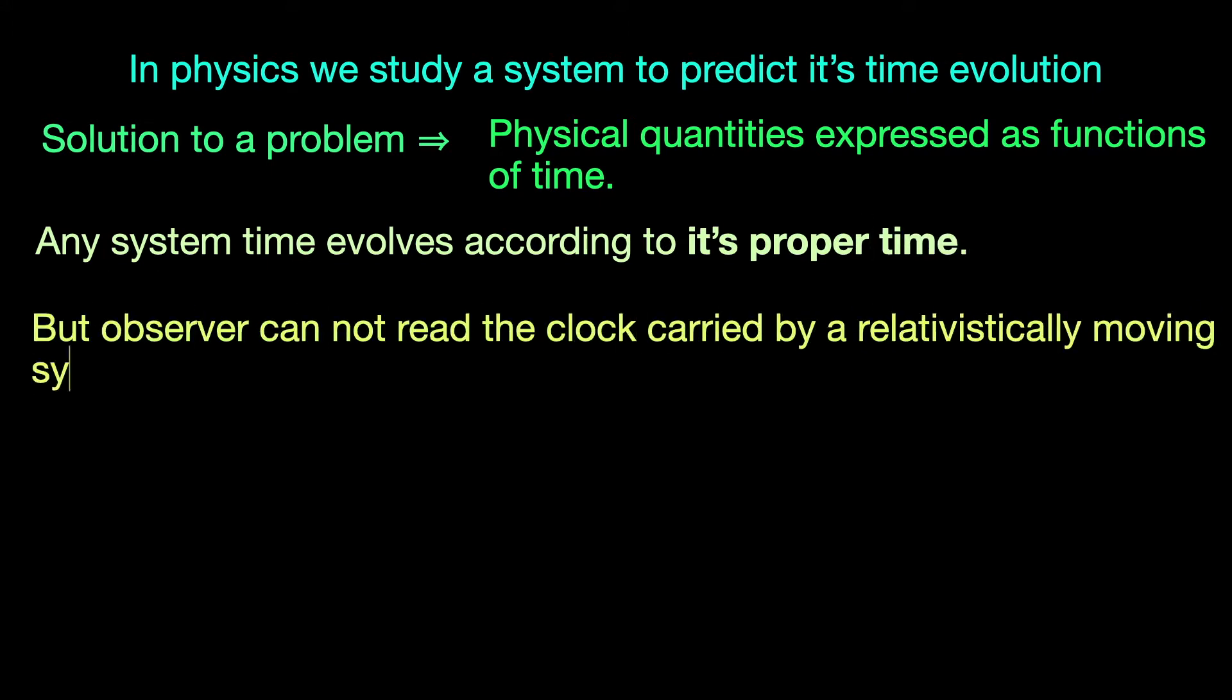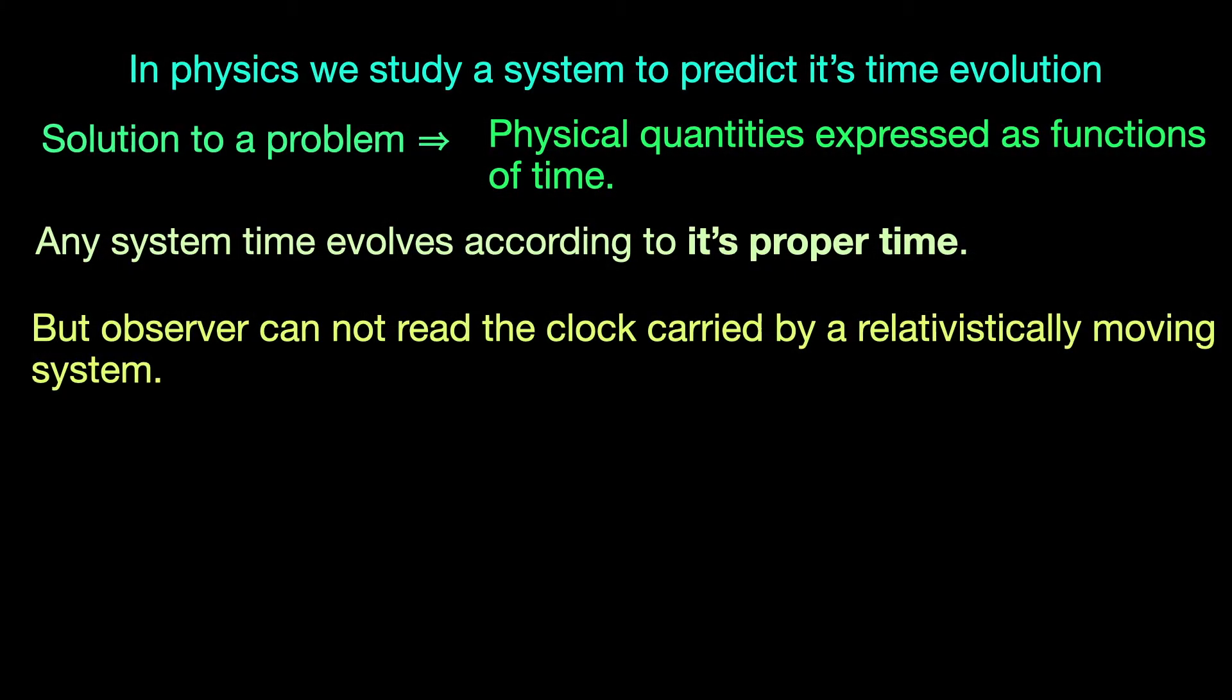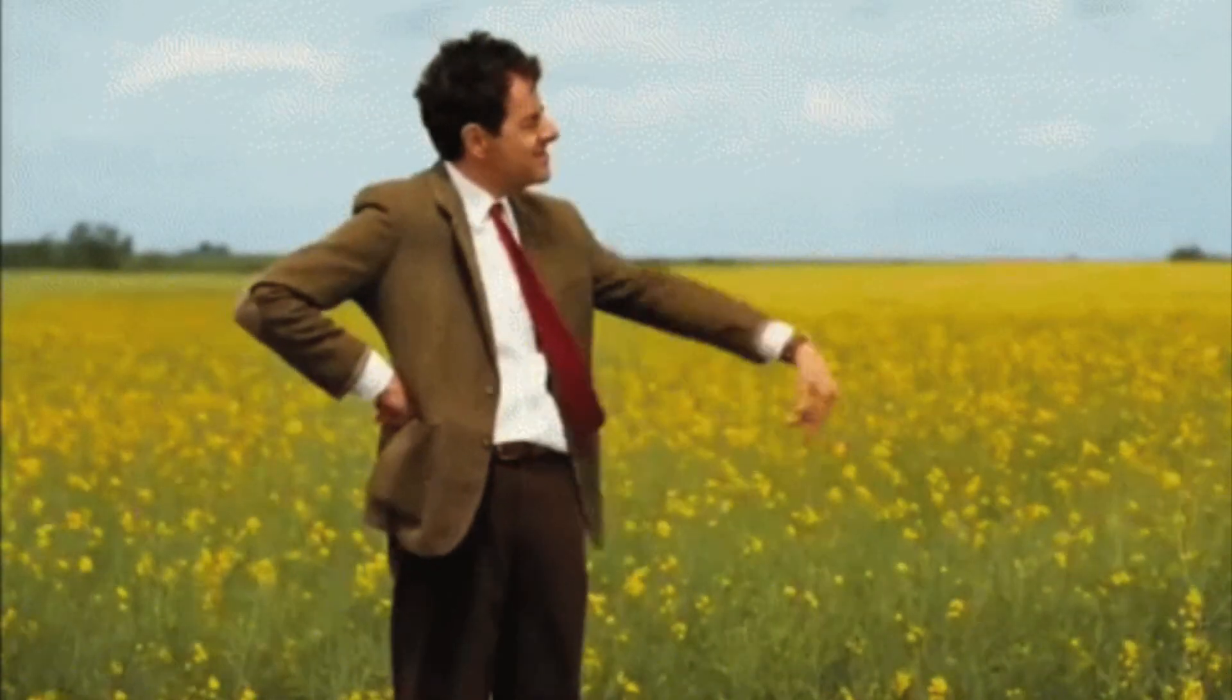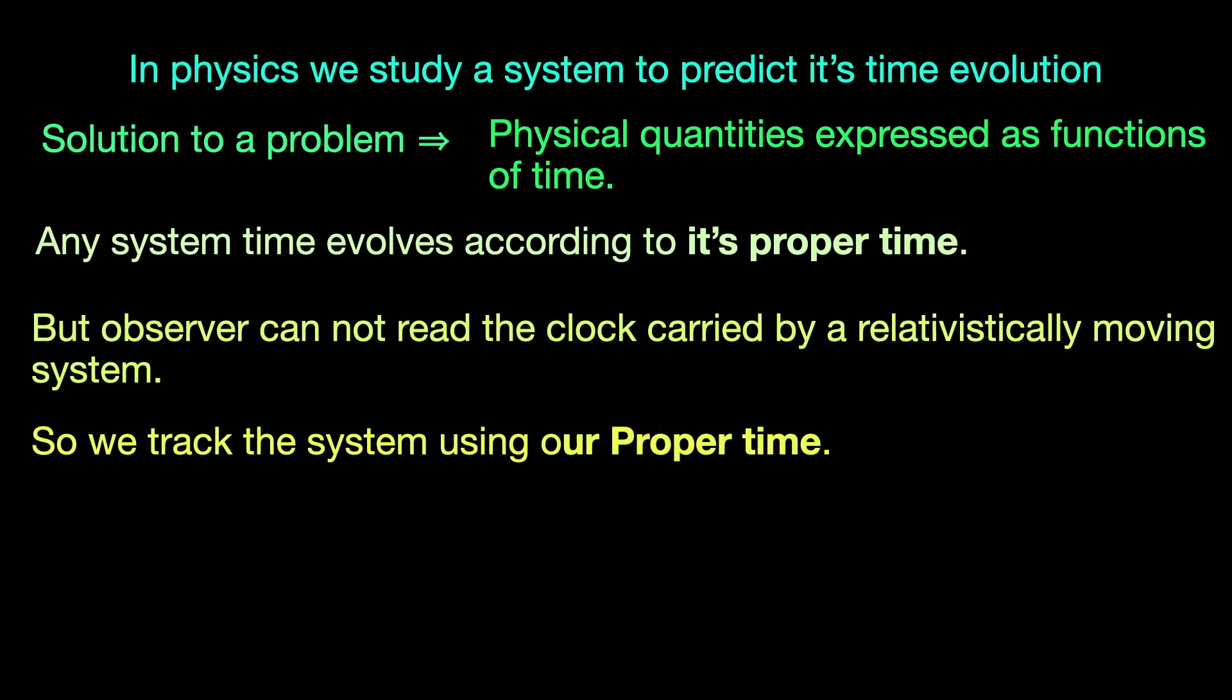But often, it is inconvenient or impractical or even impossible to read what the clock carried by the system says. After all, it is moving with an extremely high speed, remember? Thus, what we actually want is to chart out how this system evolves with the passage of our proper time so that we can predict its future course of action as per our clock readings. Therefore, while dealing with relativistic systems, we have to work with two different proper times.